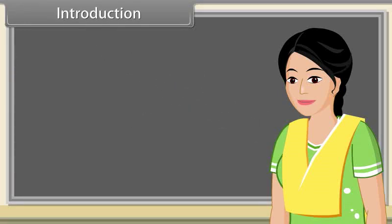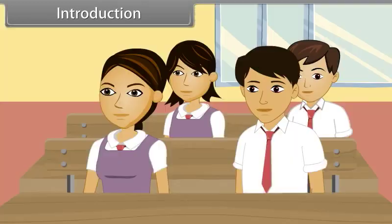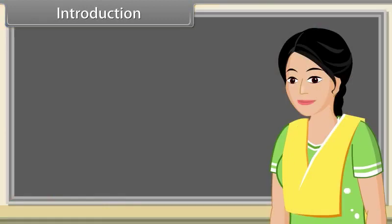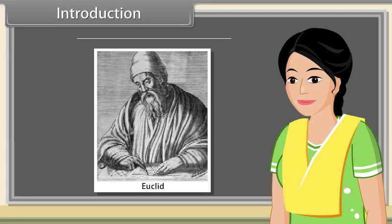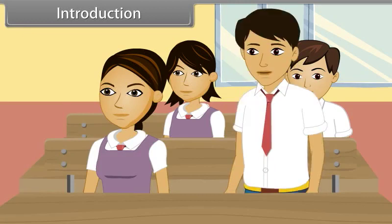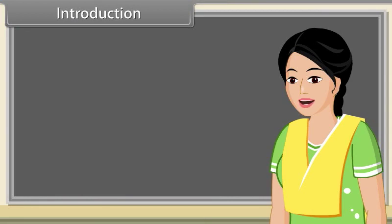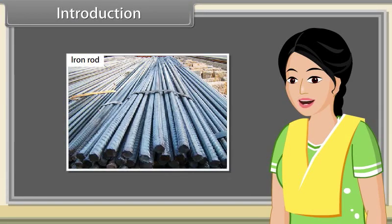Students, we all know about straight lines. Does anybody know who introduced them? The notion of a line or straight line was introduced by ancient mathematicians. Euclid was one of them. What made them introduce the straight line? They introduced the straight line to represent straight objects with negligible width and depth.